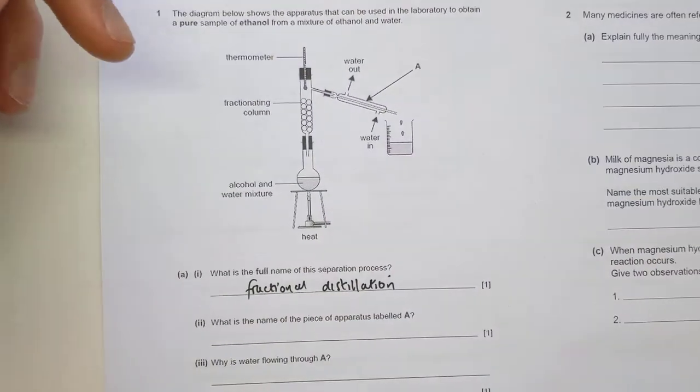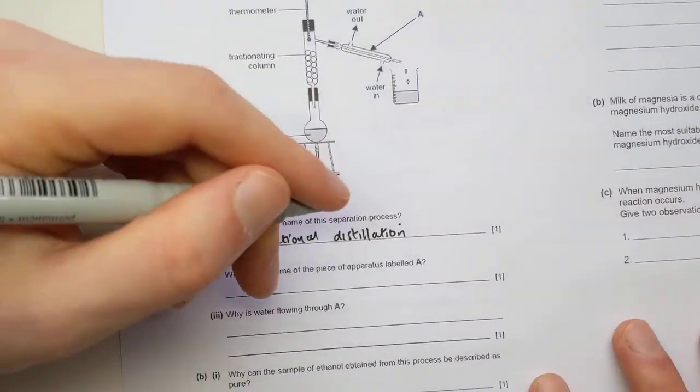What's the name of the piece of apparatus labeled A? So we just talked about that. The thing that condenses the liquid is called the condenser.